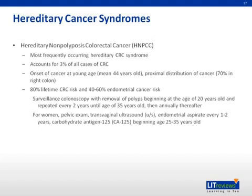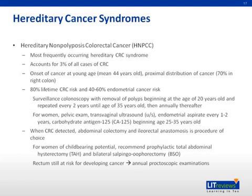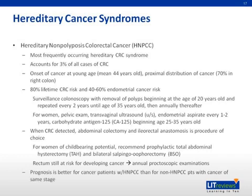In women, periodic vacuum curettage has begun at age 25 years as are pelvic ultrasound and CA-125 levels. When colon cancer is detected in a patient with HNPCC, an abdominal colectomy and ileorectal anastomosis is the procedure of choice. If the patient is a woman with no further plans for childbearing, prophylactic total abdominal hysterectomy and bilateral salpingo-oophorectomy are recommended. The rectum remains at risk for development of cancer and annual proctoscopic examinations are mandatory after abdominal colectomy. The prognosis is better for cancer patients with HNPCC than for non-HNPCC patients with cancer of the same stage.